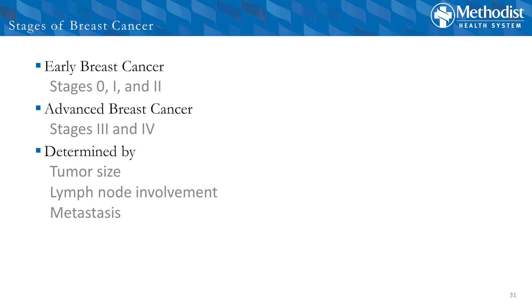The stage of breast cancer ranges anywhere from stage 0 to stage 4 — stage 0 being ductal carcinoma in situ because it's still contained within the duct, and stage 4 meaning it's spread to other parts of the body. Stage is generally determined by tumor size, whether or not lymph nodes are involved, and whether or not it's spread throughout the rest of the body. Lymph nodes are a normal part of the immune system — we have hundreds throughout the body. The ones we're most concerned about in the setting of breast cancer are the ones under the arm, because the first place breast cancer goes when it leaves the breast is to the lymph nodes under the arm.